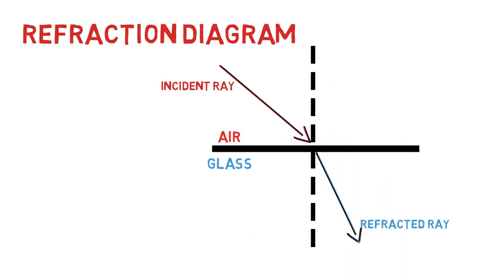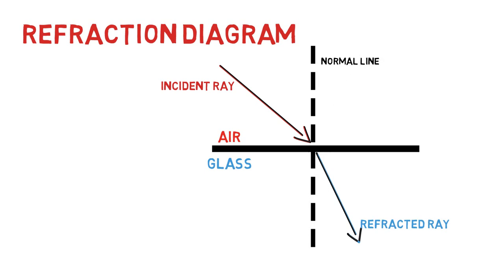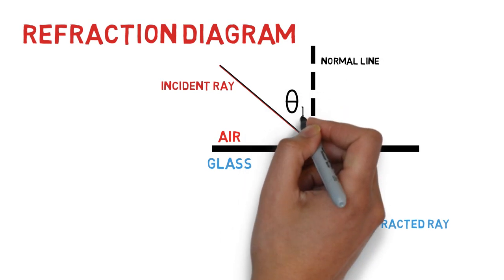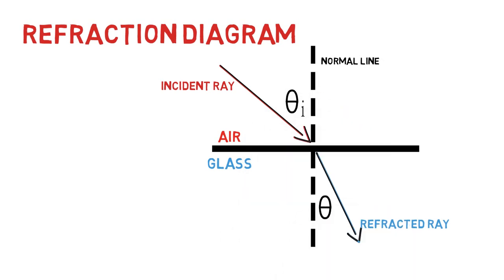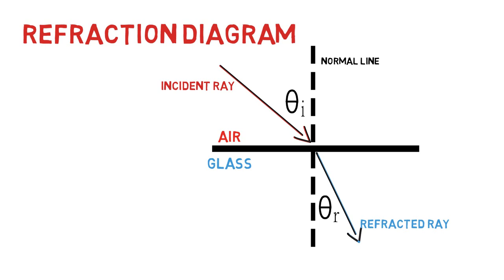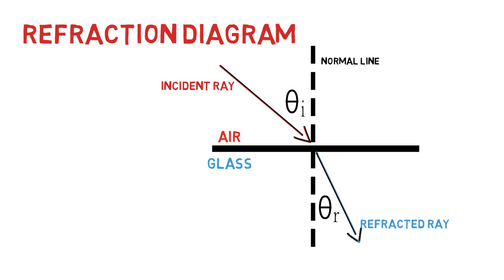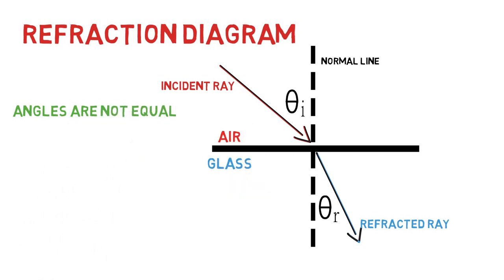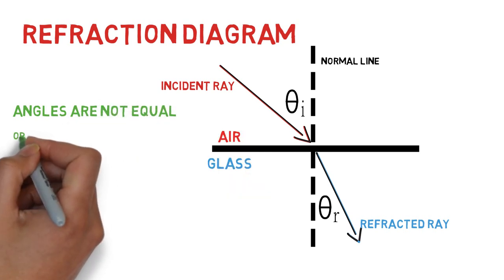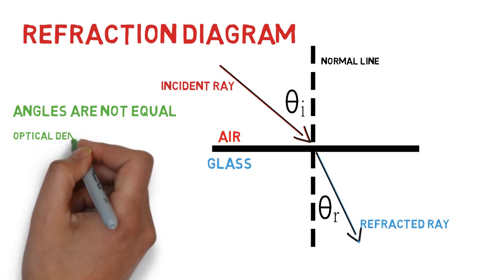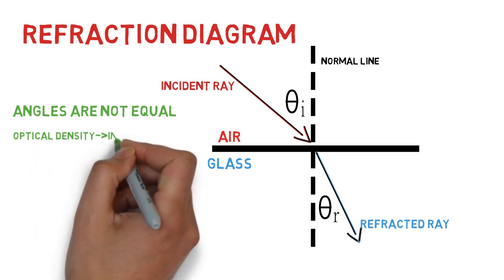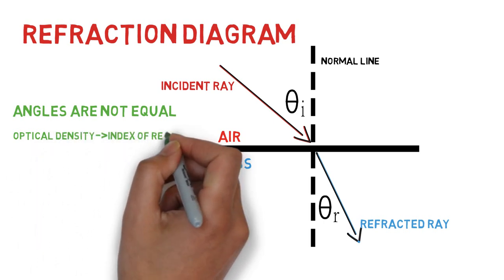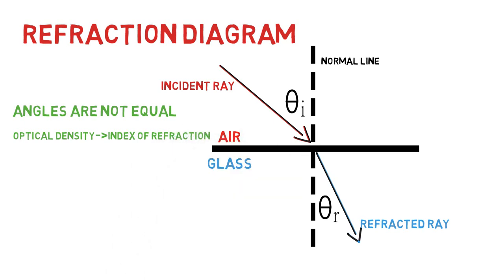Once again, at the point of incidence, a perpendicular normal line can be drawn, which creates an angle of incidence and an angle of refraction. Some key points to note in a refraction diagram are that the angle of incidence and the angle of refraction are never equal and that the amount of refraction toward the normal line depends on the optical density of the medium, indicated through a value called the index of refraction. A denser medium will have a higher index of refraction, resulting in an increased refraction of a light ray.